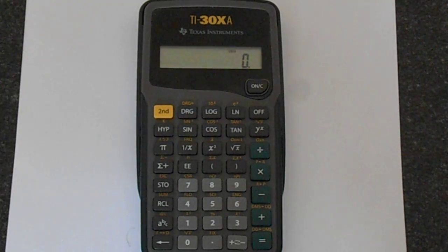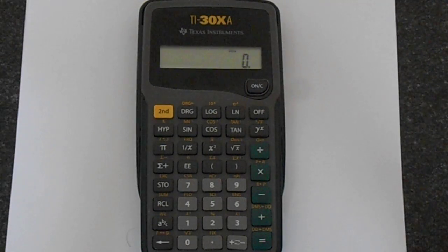The key to the trig functions is you put in the angle first. So if you want sine 30, you type in 30 sine and not sine 30. Everything is backwards.